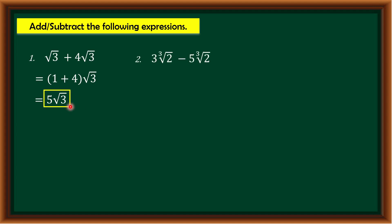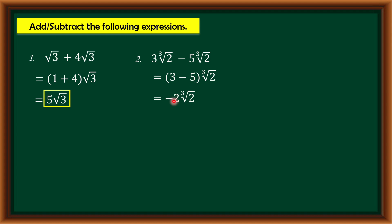Number two: 3∛2 - 5∛2. We have similar radicals, which is ∛2. We simply subtract the two coefficients: 3 - 5, and copy the radical ∛2. Since 3 - 5 = -2, our answer is -2∛2, and that is the final answer since we cannot simplify it further.